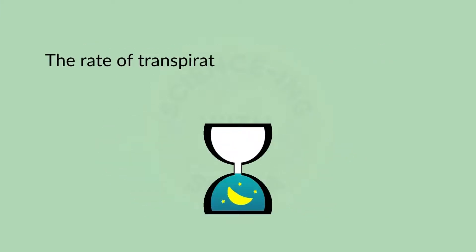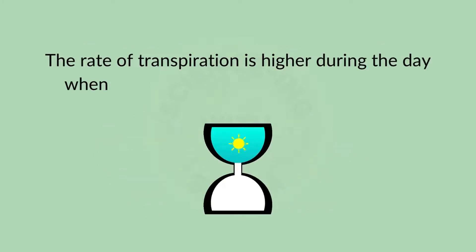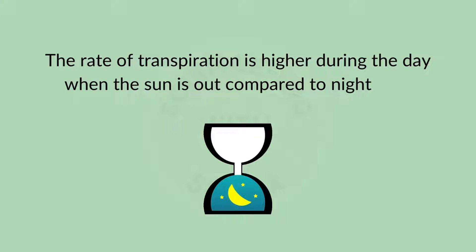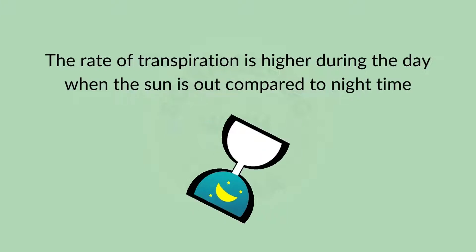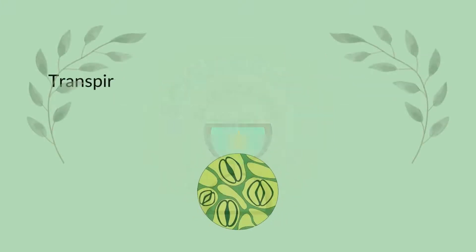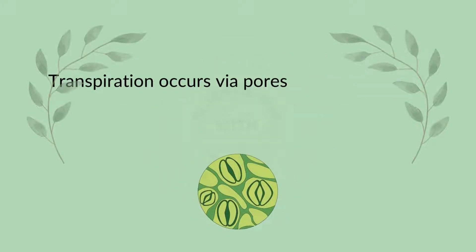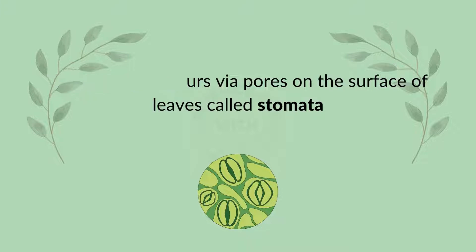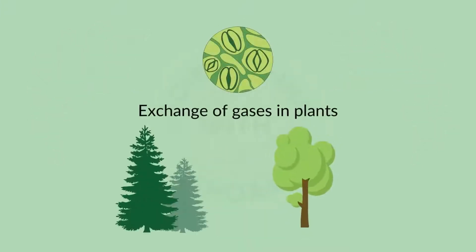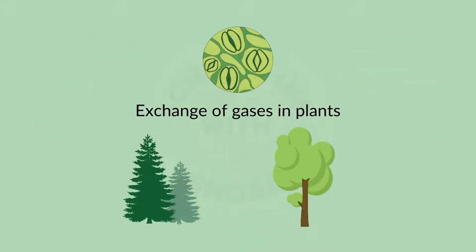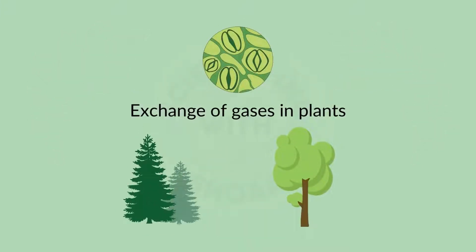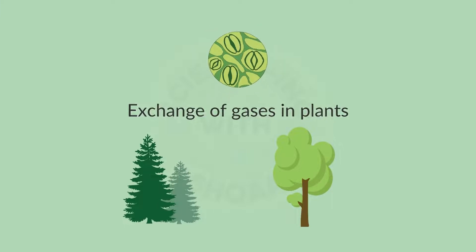The rate of transpiration is higher during the day when the sun is out compared to night time. Transpiration occurs via pores on the surface of the leaves called stomata. Stomata are primarily involved in the exchange of gases in plants.